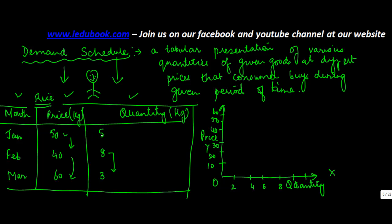So 5 kilograms at 50 rupees — 5 kilograms here, price is 50. 8 kilograms at 40 rupees — 8 kilograms here, price is 40. 3 kilograms when the price is 60 — 3 kilograms here, price is 60. Now when you join these points, the line which is formed is known as the demand curve.